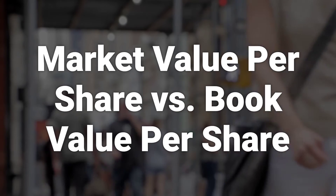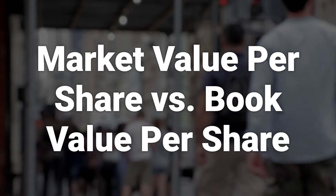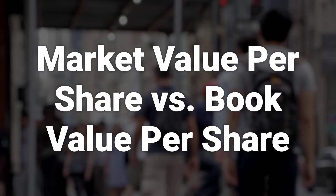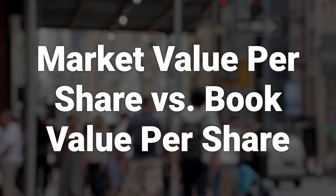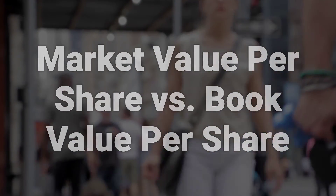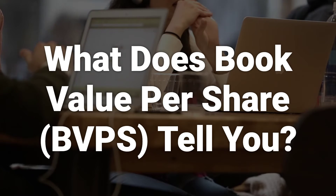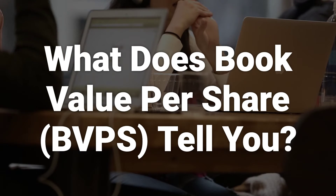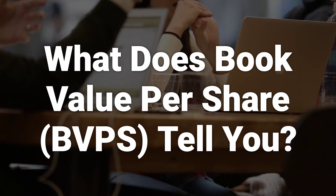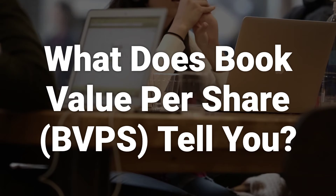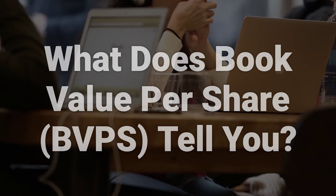While BVPS is calculated using historical costs, the market value per share is a forward-looking metric that takes into account a company's future earning power. An increase in a company's potential profitability or expected growth rate should increase the market value per share. BVPS is used mainly by stock investors to evaluate a company's stock price. If a company's BVPS is higher than its current stock price, then the stock is considered undervalued.